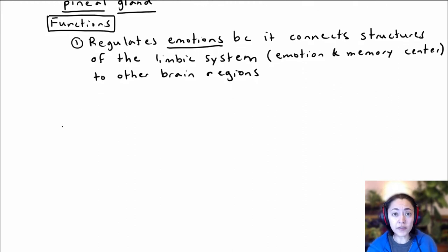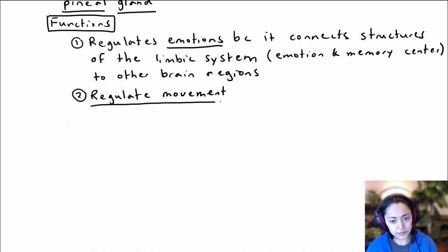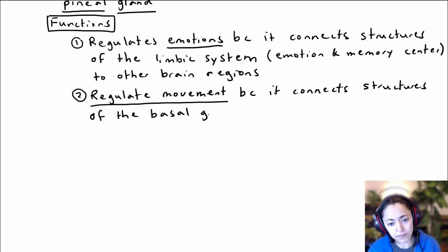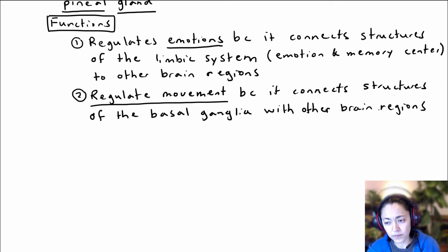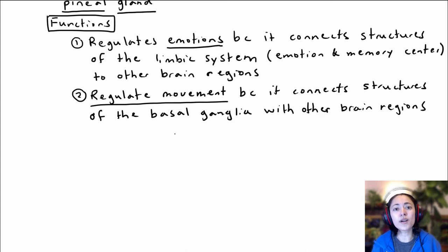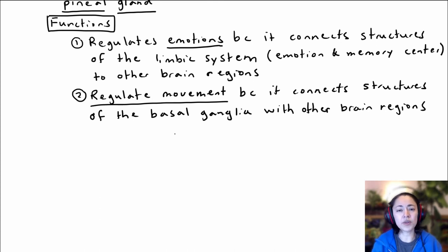The second major function of the epithalamus is helping to regulate movement, because it connects structures that are part of the basal ganglia with other brain regions. The basal ganglia is a collection of structures deep within the cerebrum that helps to modify and regulate our movements — pretty much preventing unwanted and exaggerated movements. So the epithalamus helps connect those basal ganglia structures with other brain regions, therefore helping in the regulation of movement.